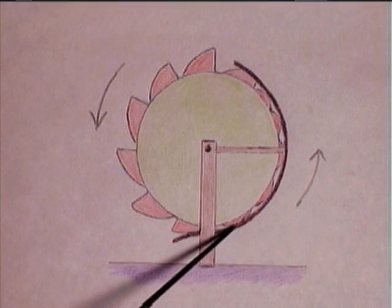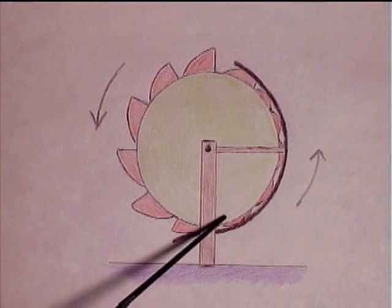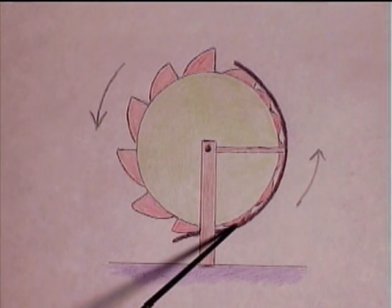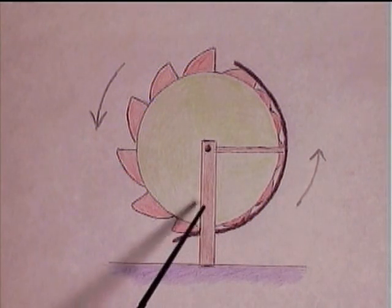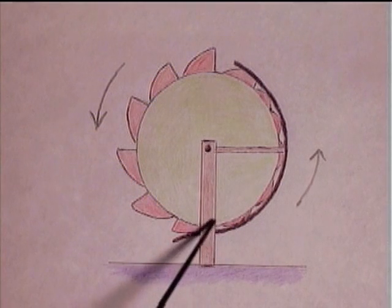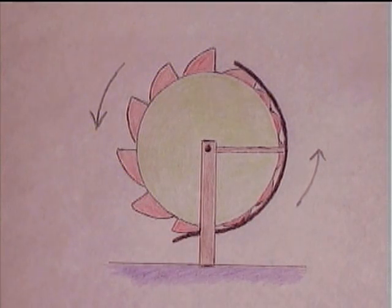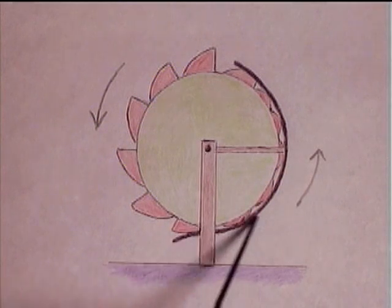And this protrusion is pressing down with 372 pounds of force. These two protrusions alone would have a total of 744 pounds of force. That would cause an enormous amount of friction and the wheel would never turn.